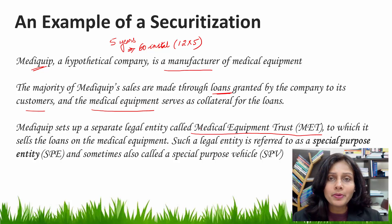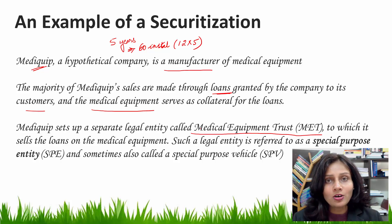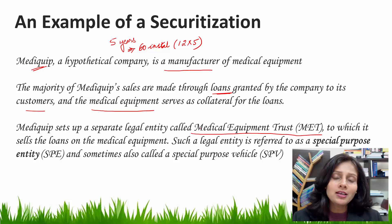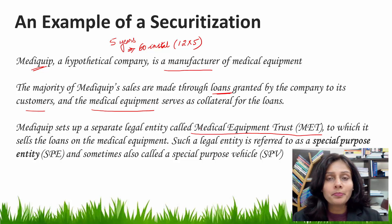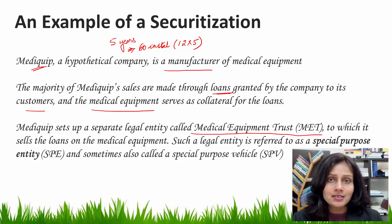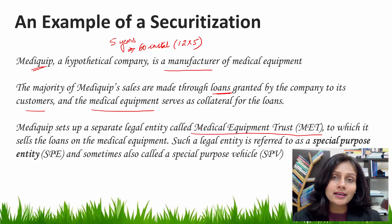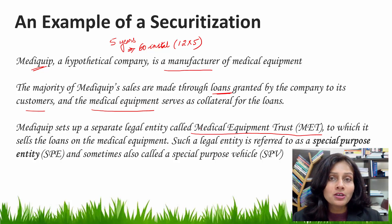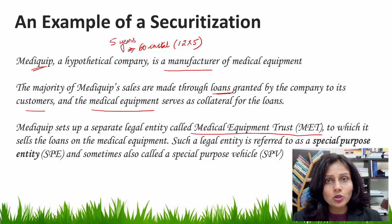The special purpose entity is legally independent and considered bankruptcy remote from the seller of the loans — that is MediCube in this case. Setting up a separate legal entity ensures that if in future MediCube files for bankruptcy, then Medical Equipment Trust, which has issued the asset-backed securities based on the loans purchased from MediCube, will be bankruptcy remote and the creditors of MediCube will not have any legal claims on them.